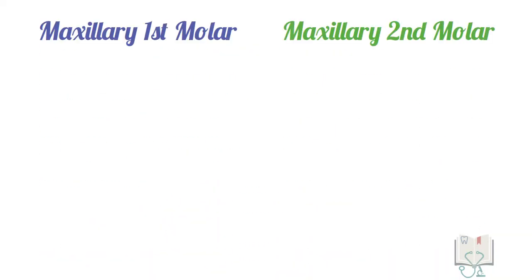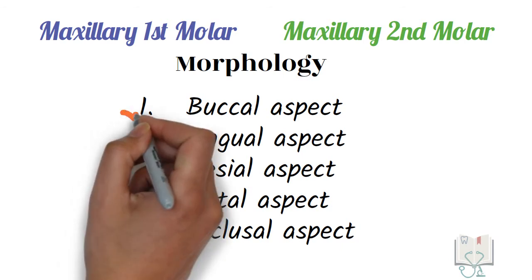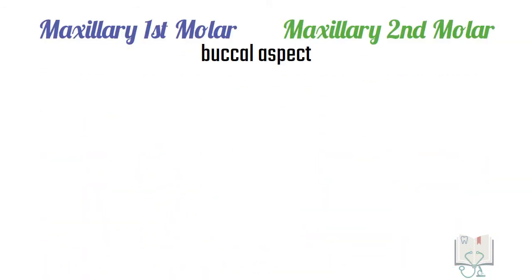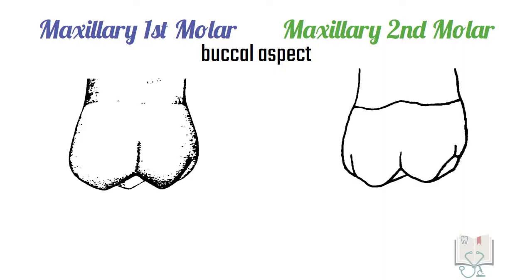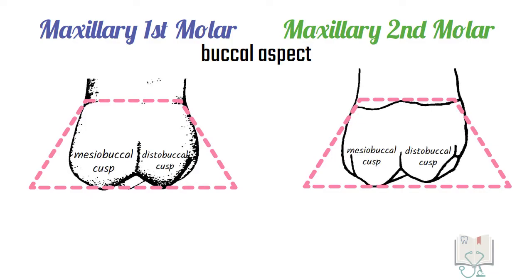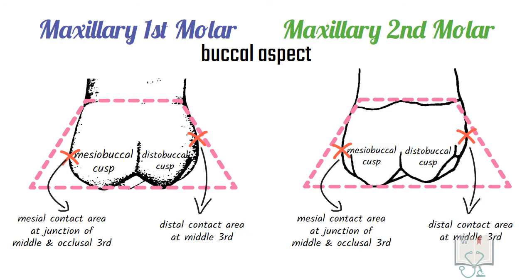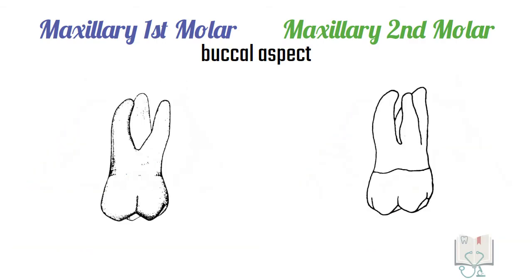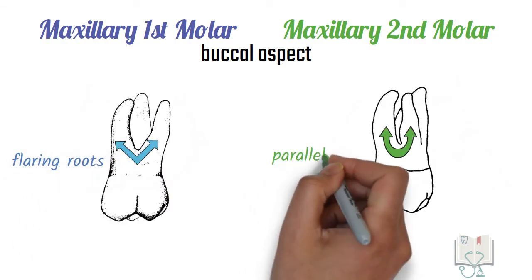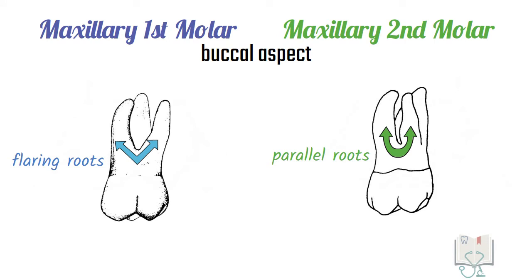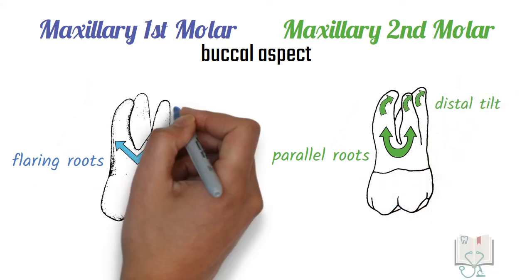Now let us study the differences in their morphology in detail, starting with the buccal aspect. If we take a look at the crown, both molars are very similar — the outline form is trapezoidal, both buccal cusps are seen, both contact areas are at the same position, and both have a cervical ridge and a buccal developmental groove. Coming to the roots, both molars have the same roots, although the roots of the first molar are more flaring than the second molar.